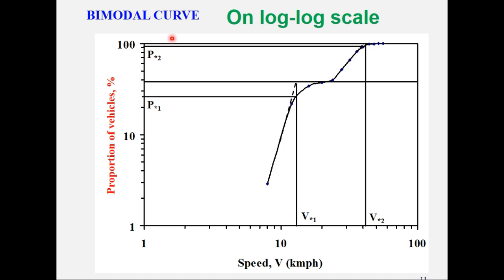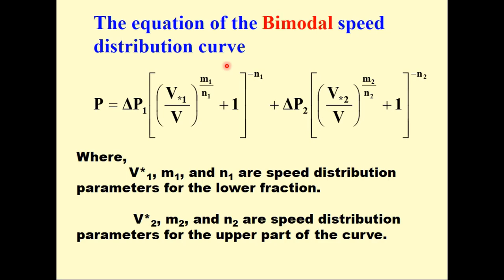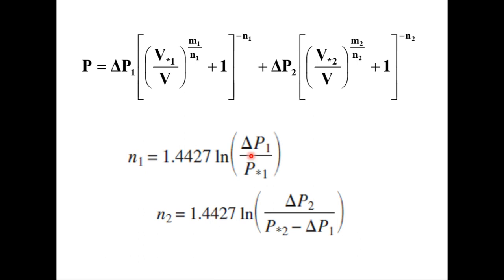Similarly, bimodal curve or bimodal distribution curve will consist of two speed fractions. The fraction corresponding to lower speed is called the lower fraction and corresponding to higher speed it is called upper fraction, delta P1 and delta P2. The equation for this would be for the first part and for the second part, sum of these two, where V star 1, m1, n1 are speed distribution parameters for the lower fraction and V2 star, m2 and n2 are speed distribution parameters for upper part of the curve. The values of n1 and n2 can be calculated using these equations.